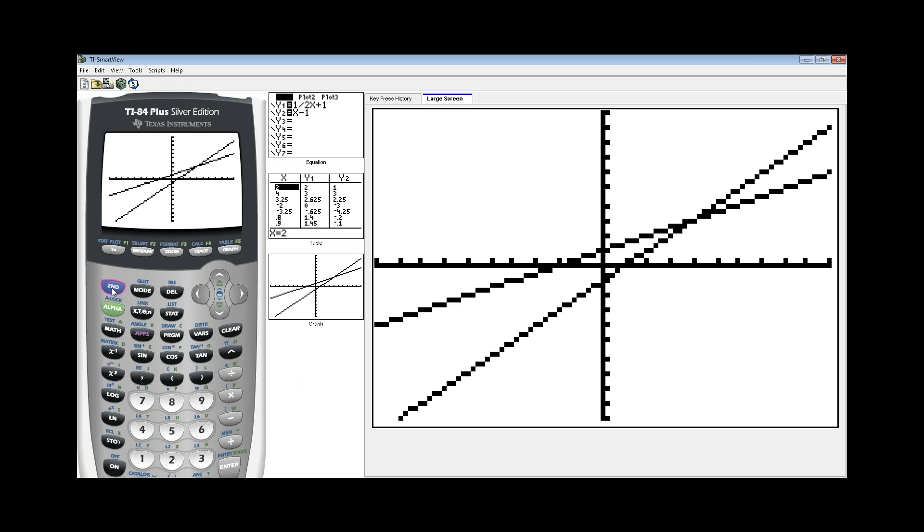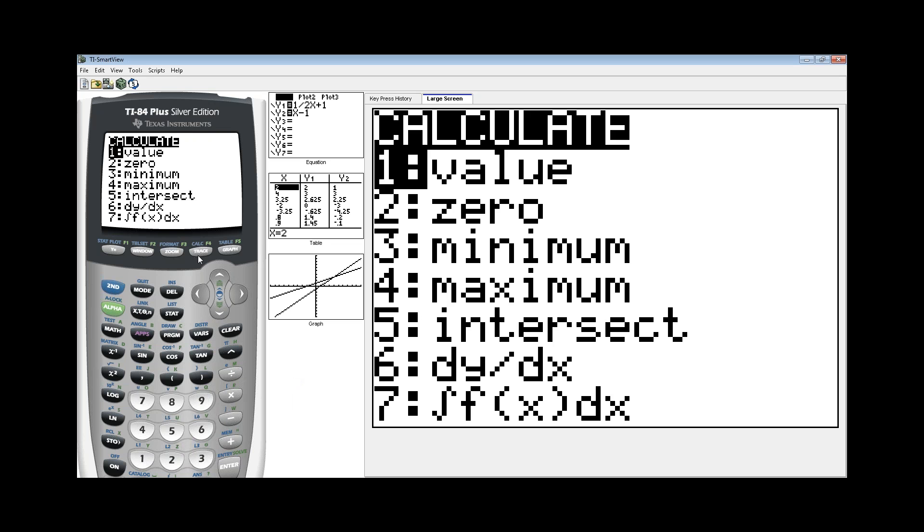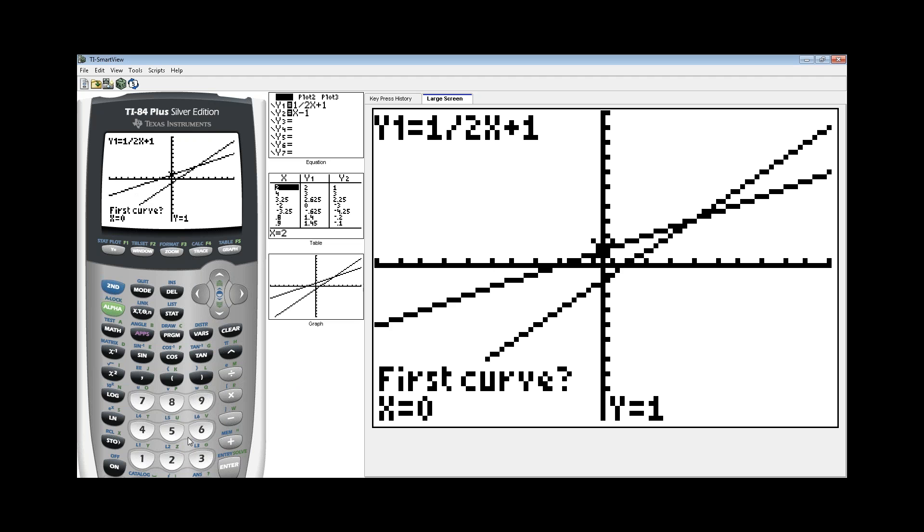To find the solution, we can use the intersect feature of this graphing calculator by pressing second and then trace. Under number 5 where it says intersect, we now have the option to find the intersection of two lines. It asks us for the first curve, hit enter. It now starts blinking on the second curve, so hit enter.